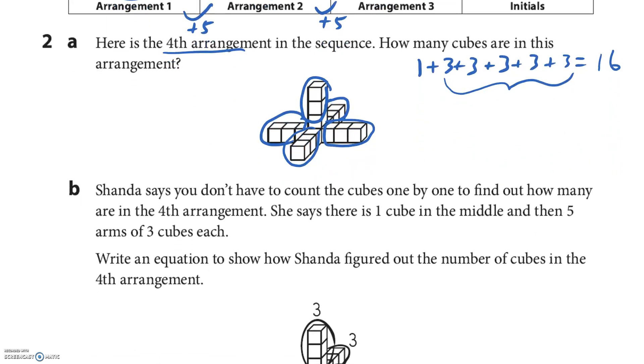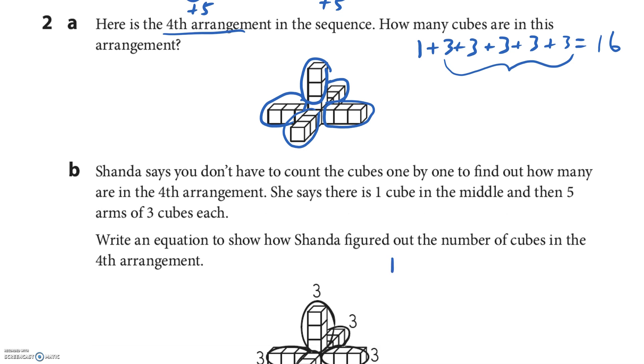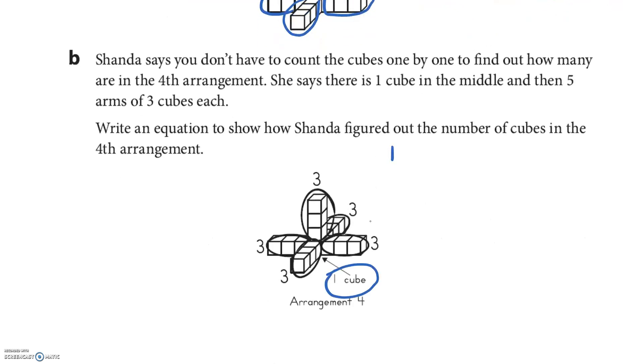All right, let's look at Shonda. Shonda says you don't have to count cubes by one by one to find out how many are in the fourth arrangement. She says there's one cube in the middle, then five arms of three cubes. Hey, that's kind of what we said. Write an equation to show how Shonda figured out the number of cubes. So she starts with the one, and then she added the five arms times three cubes, and that was that fifteen that we got, plus the one, so she got 16 cubes also.